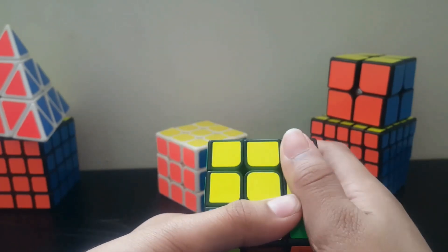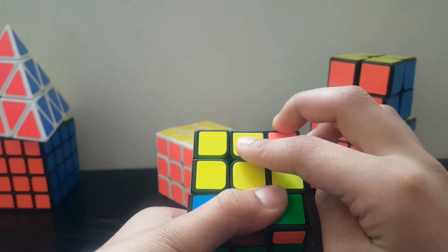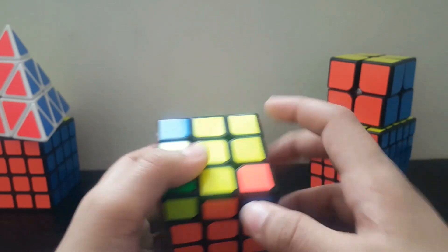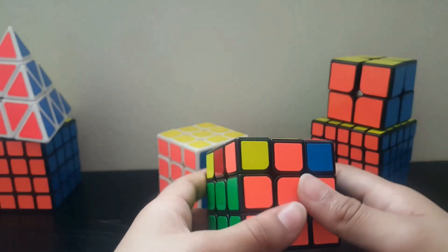But instead of getting a line, if it was just like this, like an L, then you have to do this algorithm two times or twice.